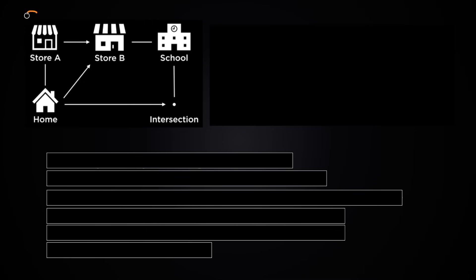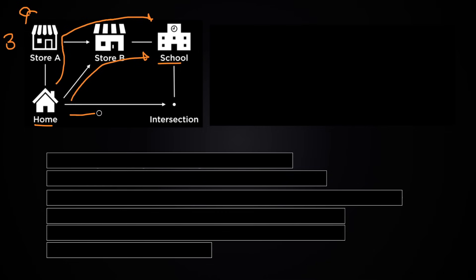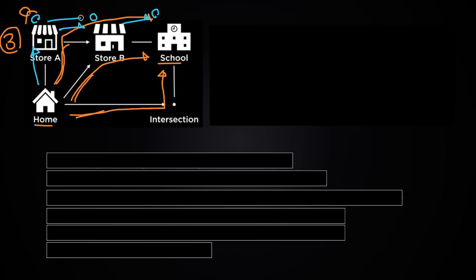Coming back to the previous example — let's say you want to find the shortest path from home to school. Solving this by hand is pretty easy: you can see there are three potential paths from home to school. Just compare the distance for each path and pick the shortest one. You can use the longitudes and latitudes — the coordinates of each place — to find the distance in kilometers.